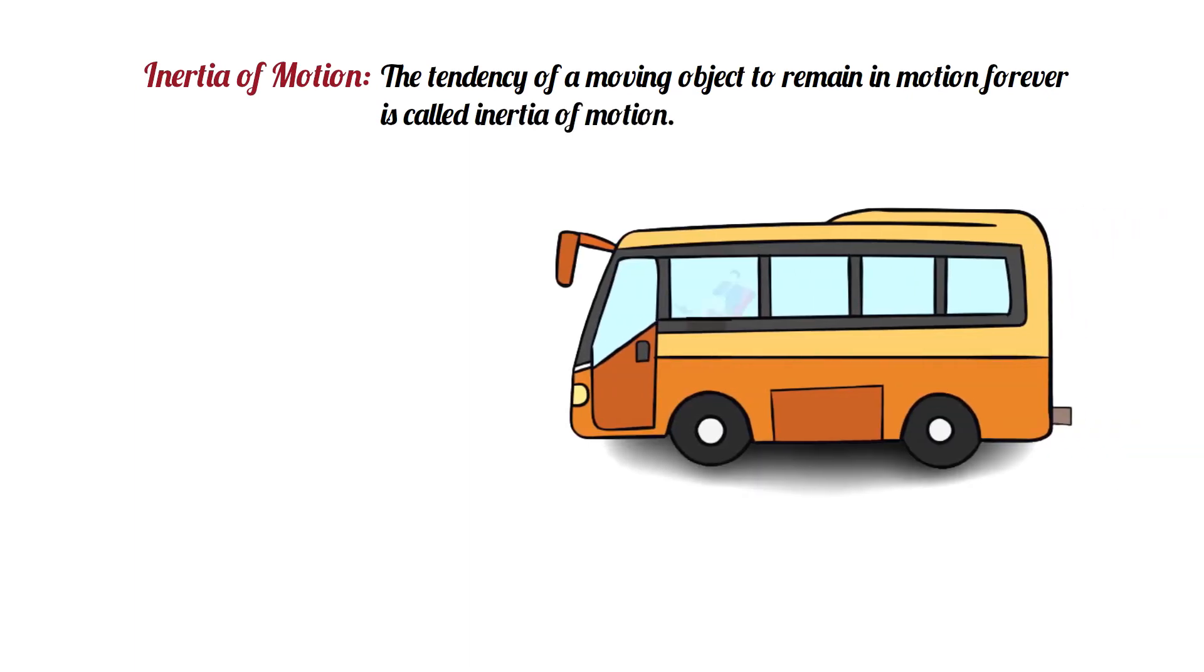Inertia of motion. The tendency of a moving object to remain in motion forever is called inertia of motion. When a moving vehicle stops suddenly, the passenger leans forward. It happens because of the inertia of motion.